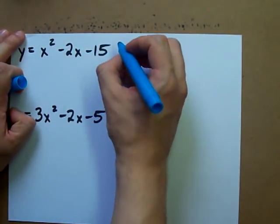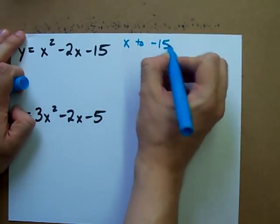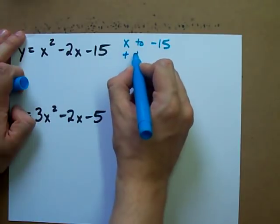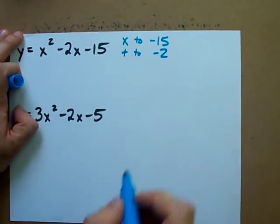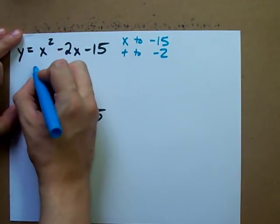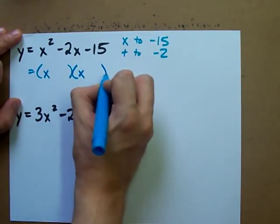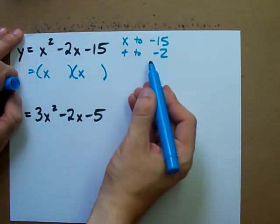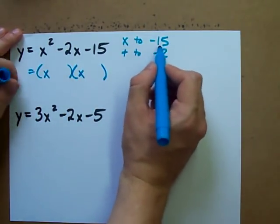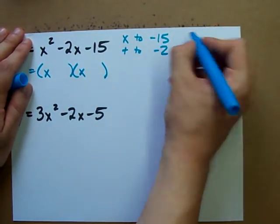Find two numbers that multiply to negative 15 and add to negative 2. As soon as you find those two numbers, you can plug them right in. Let's figure out what those numbers are. If they have to multiply to negative 15 and add to negative 2, what multiplies to negative 15? Negative 1 and 15 multiply to that, but they add to positive 14. So that's no good.